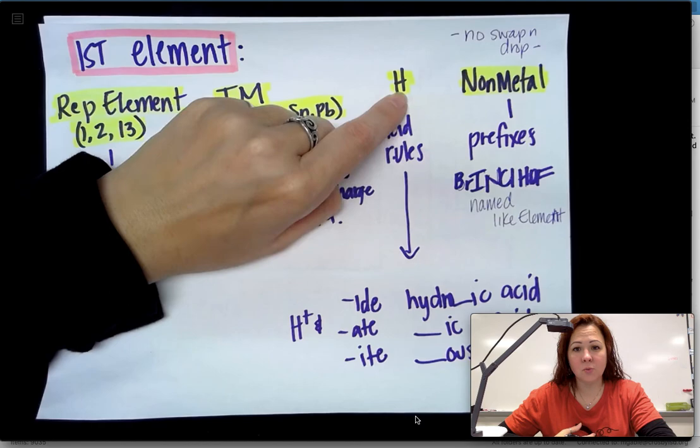The next one starts with H. That H means that I follow my acid naming rules. ClO3 is chlorate. So instead of having chlorate, I'm going to put chloric and then acid. Remember the H means that you have an acid.